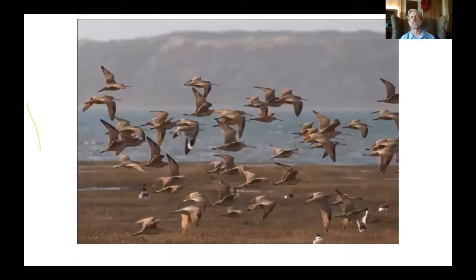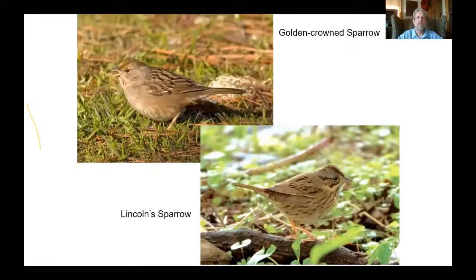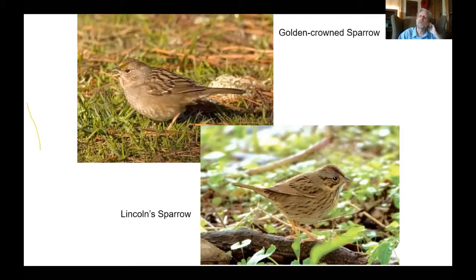Some birds really like to be in flocks. If you go to a place where marbled godwits are common, you'll find they're flocking together — not scattered out as individuals. They flock together and enjoy each other's company. Within families there are some real differences. Golden-crowned sparrows, when they show up to spend the winter, are usually in flocks — they may be mixed with white-crowned sparrows, white-throated sparrows, or juncos. They're very sociable birds. If you find golden-crowned sparrows, if you find multiples, they'll be together.